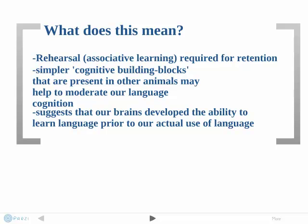Since the dog cannot possibly understand what equivalence classes are, the study suggests our understanding of them comes from simpler mechanisms found in other animals. Therefore, we would seem to need to be able to acquire language naturally before being able to create it, which suggests that our brains develop the ability to learn language prior to our actual use of language. This all supports iLanguage because it proves that language is learned from more than just the outside world.